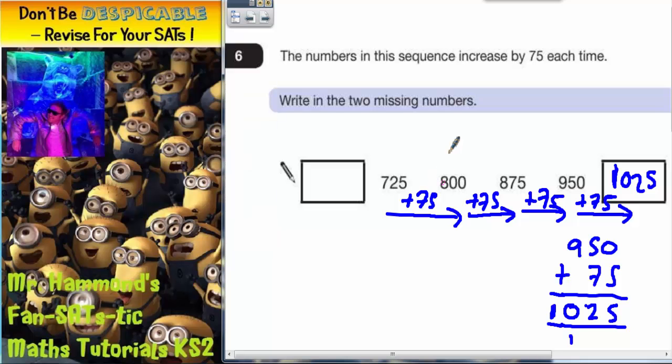Now I did say earlier that when the numbers in the sequence increase by 75, that means when you're going forwards in the sequence. If you're going backwards in the sequence, you're going the opposite direction.